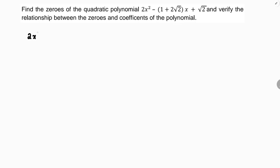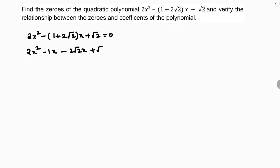So: 2x² minus (1 plus 2√2)x plus √2 equals 0. I'll open the bracket and write: 2x² minus x minus 2√2·x plus √2 equals 0.